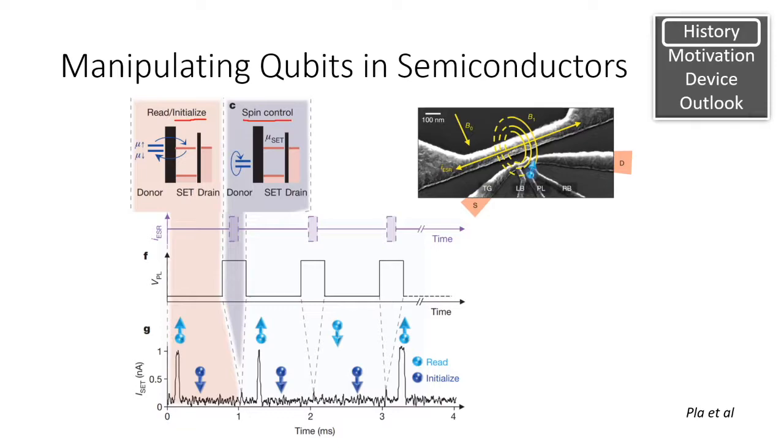For any qubit system, we want to first be able to initialize it to some predetermined state. Second, be able to manipulate the qubit, and then finally read the qubit's final state.